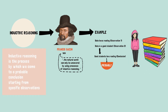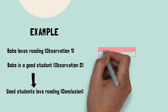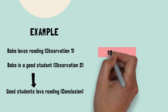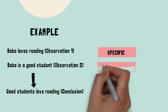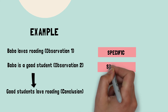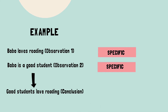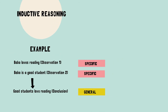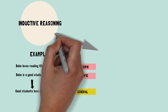Let's also look at the phrases from a general to specific perspective. Bobo loves reading — this is a specific observation. Bobo is a good student — this is also a specific observation. Good students love reading — this is a general conclusion.